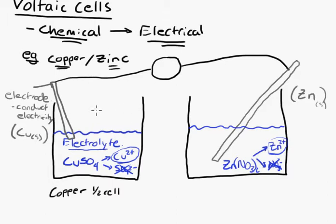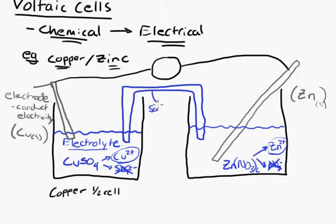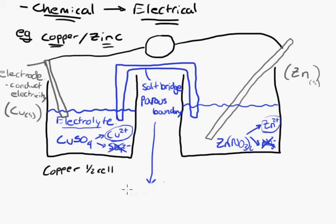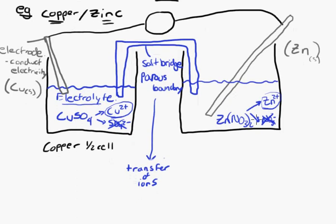Now we need to connect these two half cells because this isn't a complete circuit — it's just half and half. We connect them in the middle with something called a salt bridge, sometimes called a porous boundary or porous cup. The only purpose of that salt bridge is to allow the transfer of ions between the two half cells.